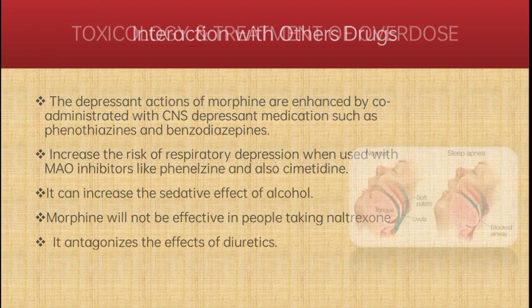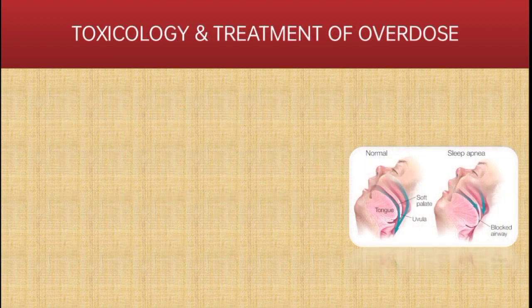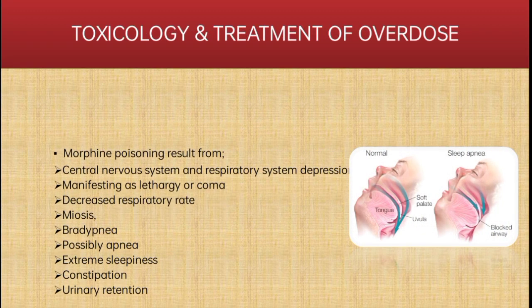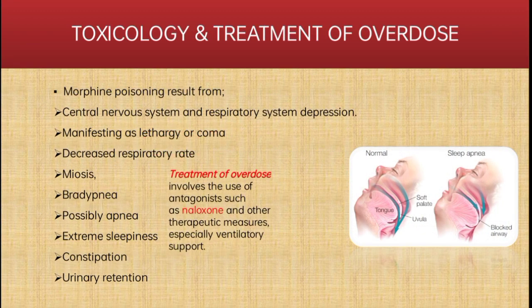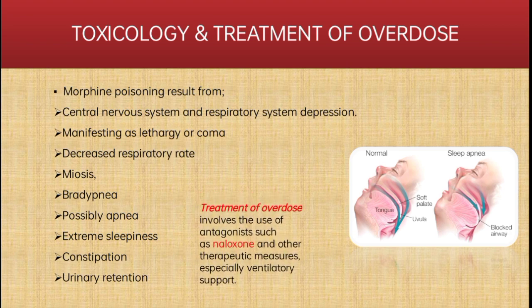Moving towards toxicology and treatment of overdose: morphine poisoning results from central nervous system and respiratory system depression, manifesting as lethargy or coma, decreased respiratory rate, miosis, bradypnea, possibly apnea, extreme sleepiness, constipation, and urinary retention. The treatment of overdose involves the use of antagonists such as naloxone and other therapeutic measures, especially ventilatory support.